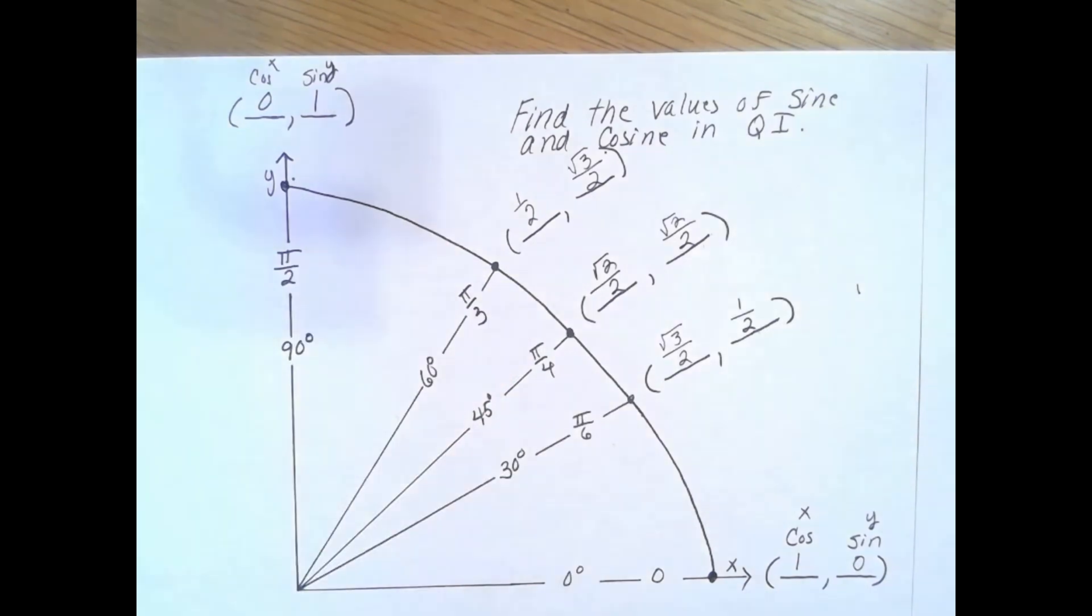Let's first of all talk about our quadrantal angles. Remember that on a unit circle the radius is 1. So if I start at my origin I would go over one unit and up zero. Therefore cosine has a value of one and sine has a value of zero at zero radians.